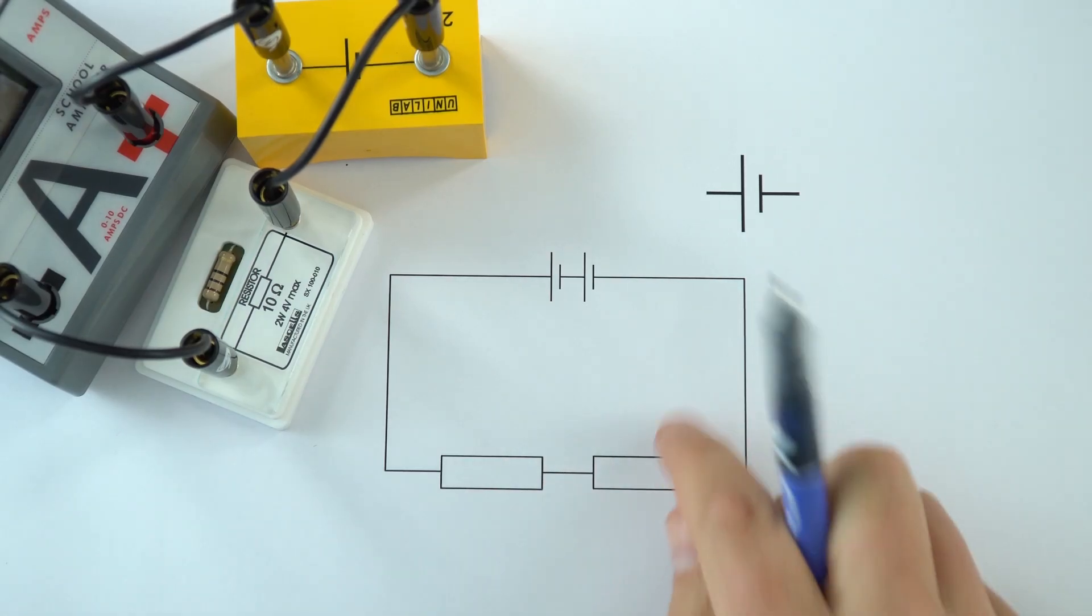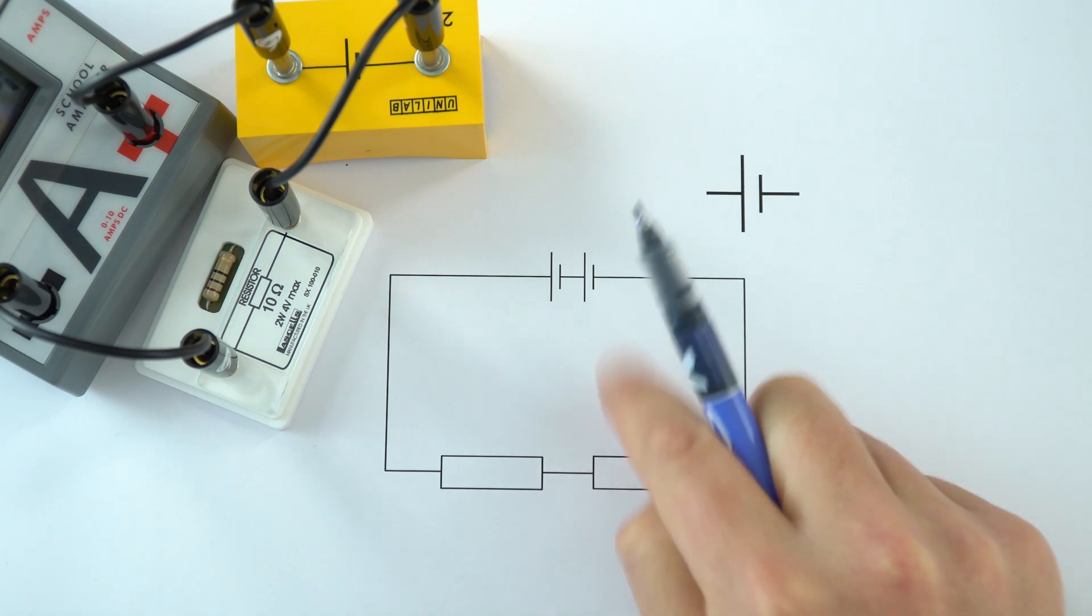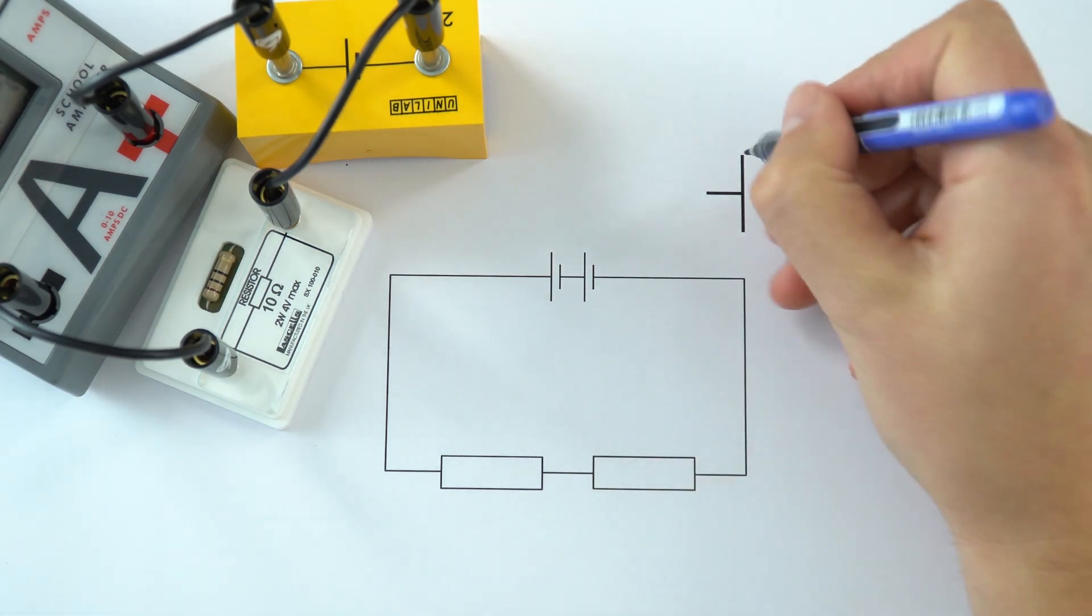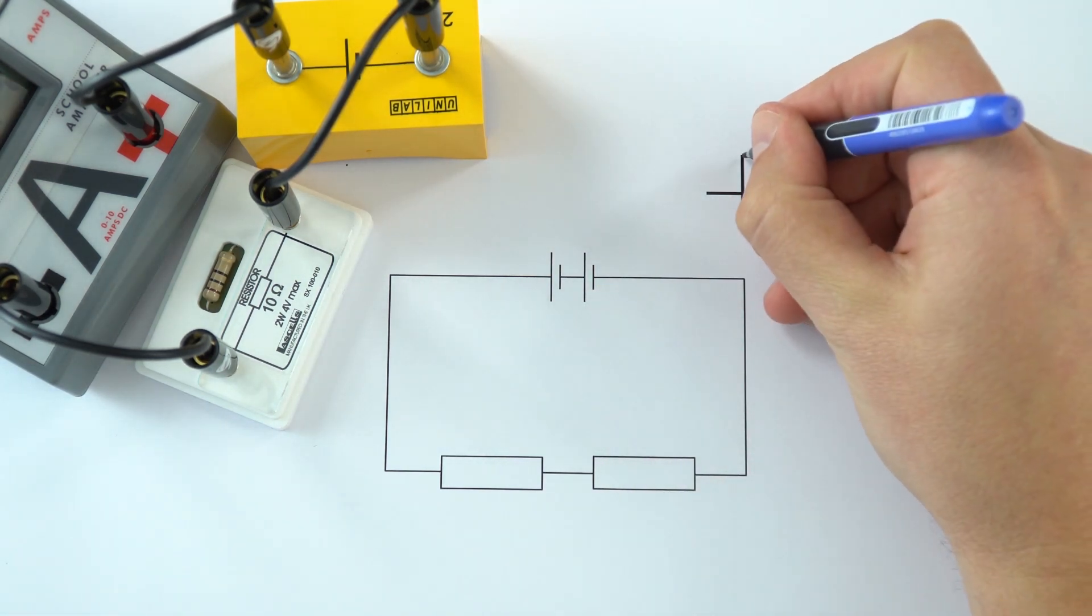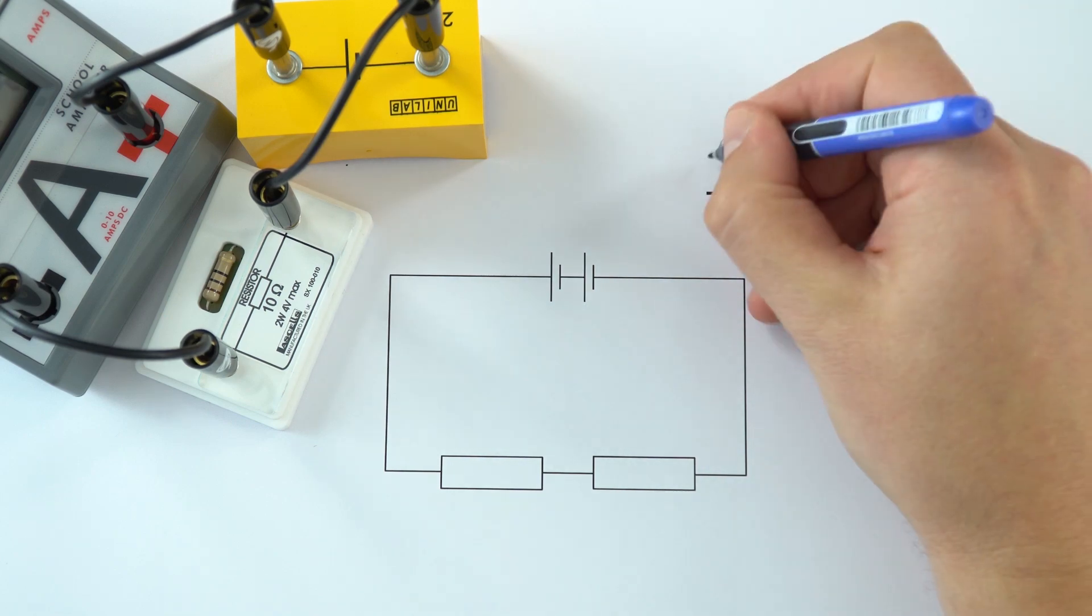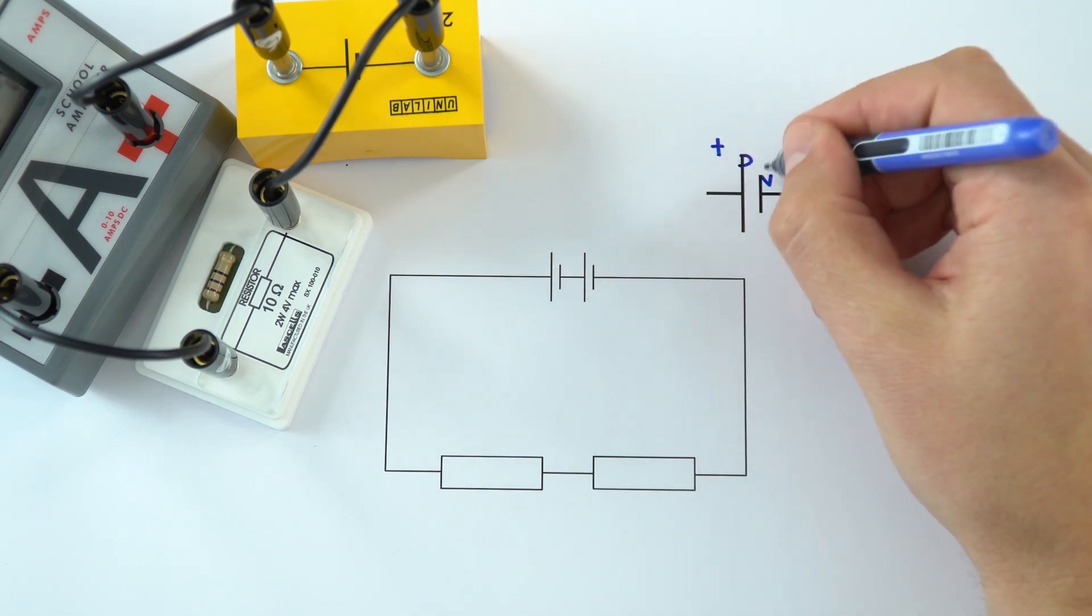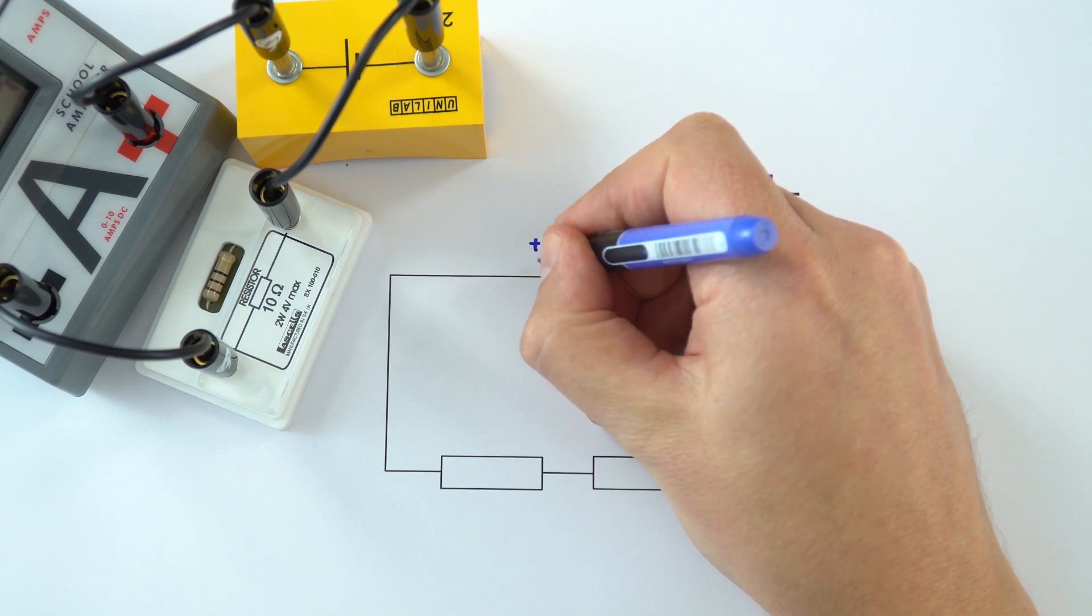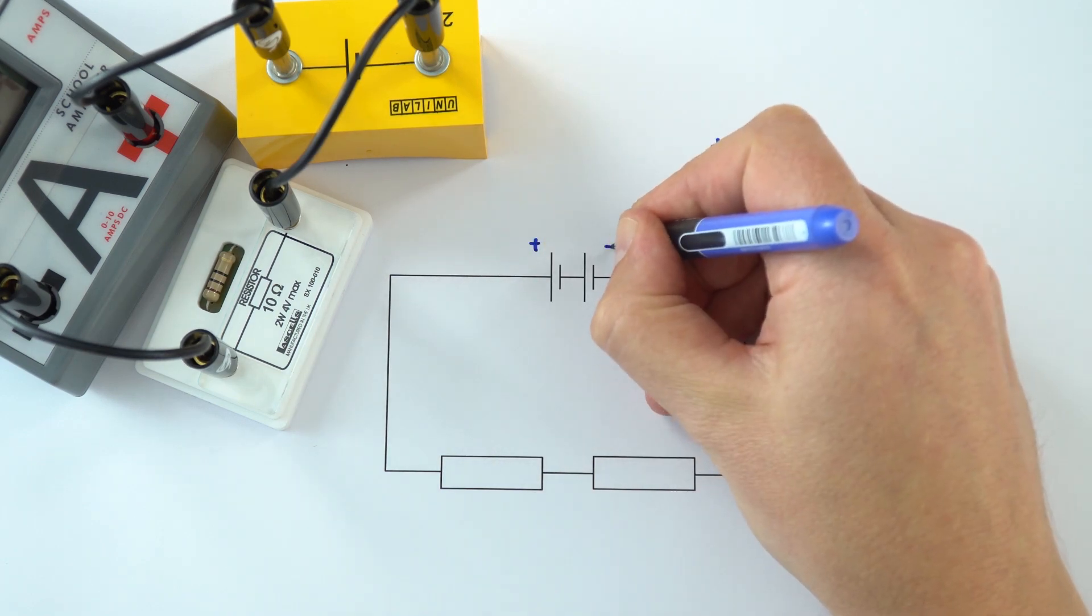So in this circuit diagram here, we've just got two cells and two resistors. Now the cell, the longer side is the positive side, and we can maybe think about this as positive and negative. So this is the positive side of the cell, and that means that this is the positive side of the battery, and that's the negative end.